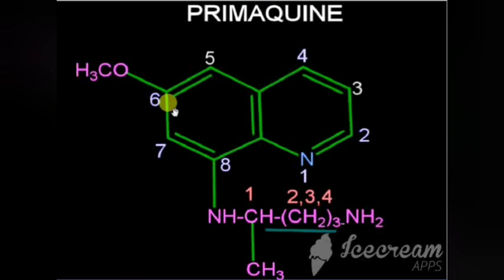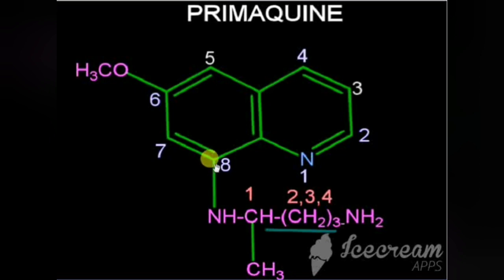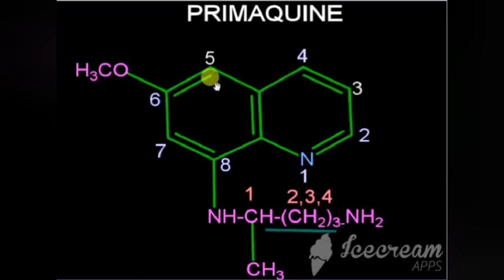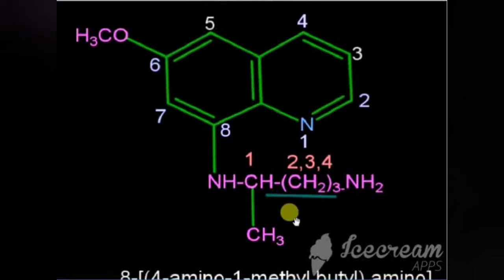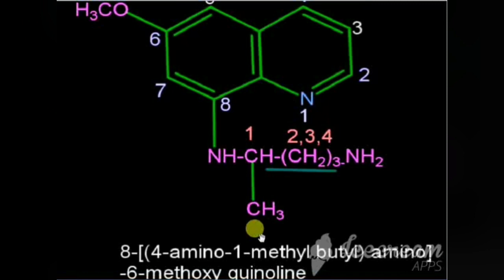For the chemical name of primaquine: the 6th portion has a methoxy group, the 8th portion has an amino group connected to a 4-carbon butyl chain — 1st carbon has a methyl, 4th carbon has an amino group. The chemical name is: 8-(4-amino-1-methylbutylamino)-6-methoxyquinoline.